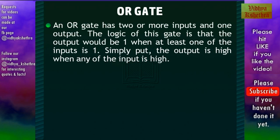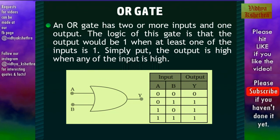The OR gate has two or more inputs and one output. The logic of this gate is that the output would be 1 when at least one of the inputs is 1. Simply put, the output is high when any of the inputs is high. The symbol and the truth table are as shown in this figure.